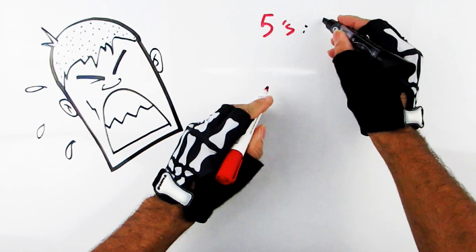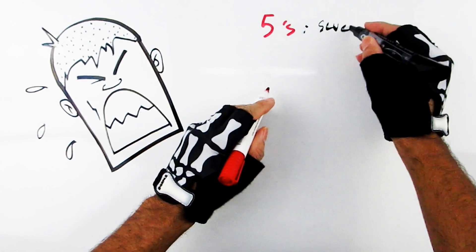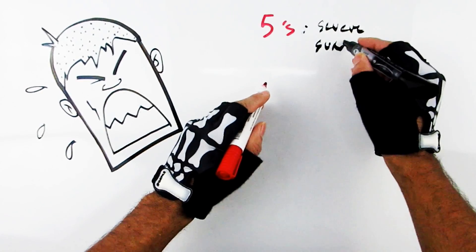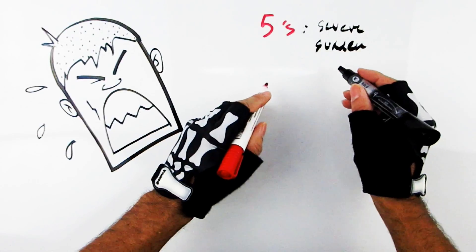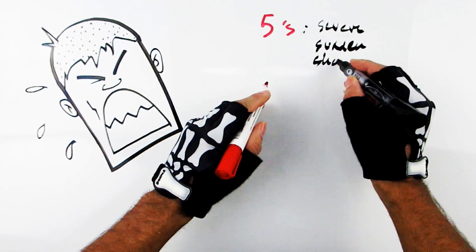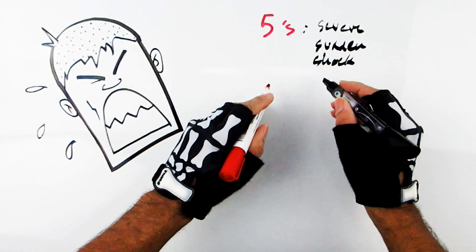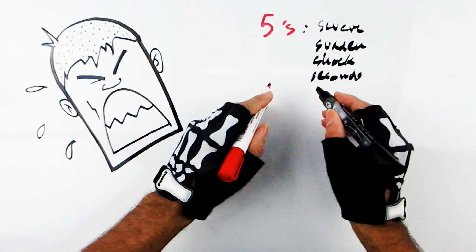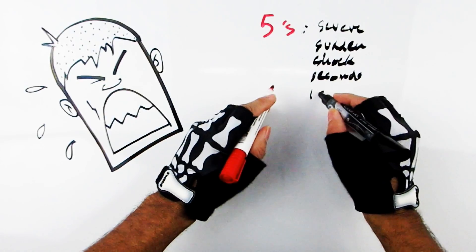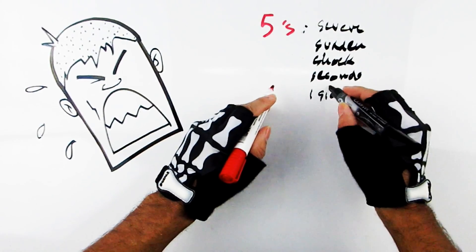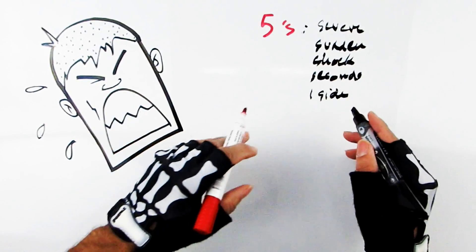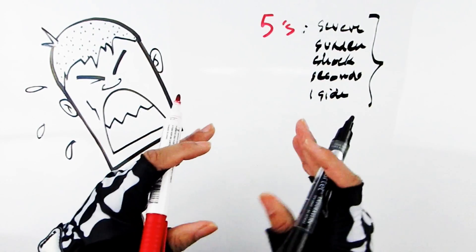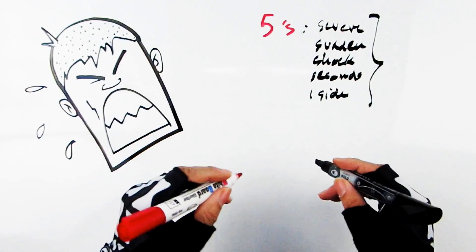The first one is severe pain. Severe, then they're sudden, they're shocking in quality, they last for seconds to minutes, and typically on one side. In about one to five percent of cases it could be on both sides. So these are the five S's that immediately clue me in that we're on the path towards a diagnosis.